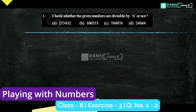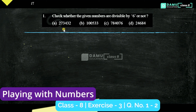Our first question: check whether the given numbers are divisible by 6 or not. We don't have a direct divisibility rule for 6, so we write 6 as a product of two factors that do have divisibility rules. 6 equals 2 times 3.